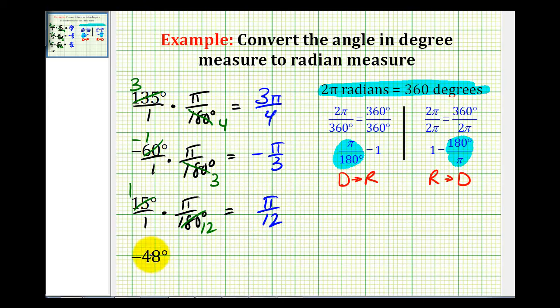And we'll take a look at one more. 48 and 180 have a common factor of 12. There are four 12s in 48, so this simplifies to negative four. And there are fifteen 12s in 180. So here we have negative four pi divided by 15 radians.